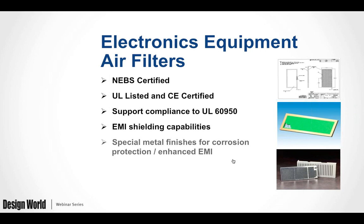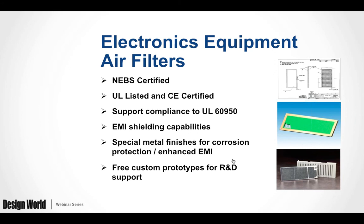Before the enclosure products discussion, here are a few reminders of what to consider when starting the air filter spec process in electronics equipment. There are things like NEBS certification, which telecom customers such as Verizon and AT&T will require for equipment deployed into their public switch telephone networks. There are UL and CE flame retardancy requirements, which are typical in electronics applications. Many electronics devices are listed to UL 60950, equivalent to European standard EN 60950. You should also consider the need for EMI shielding qualities, metal finishes for industrial design or corrosion protection and enhanced EMI, and finally partnering with an air filter manufacturer that can provide custom prototypes for your R&D testing and new product development.